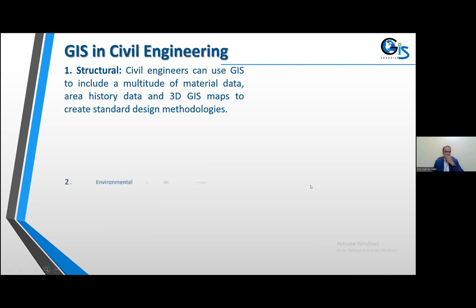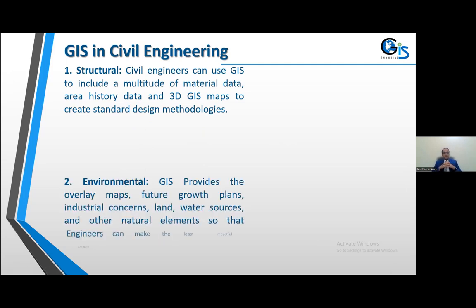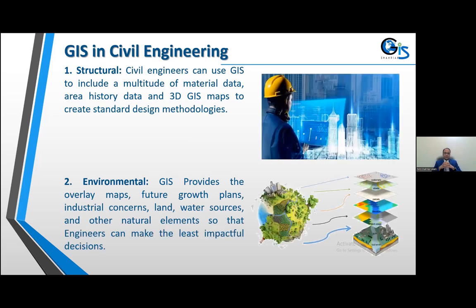First of all, let's see GIS in civil engineering. If you are from civil engineering, you already know about your structural-based projects. Civil engineers can use GIS to include a multitude of material data, area history data, and 3D GIS maps to create standard design methodologies. In environmental-based projects, GIS provides overlay maps, future growth plans, industrial concerns, land, water resources, and other natural elements so that engineers can make the least impactful decisions. It is the combination of spatial data and non-spatial data.